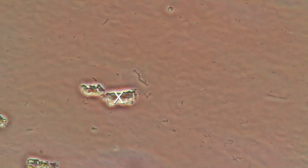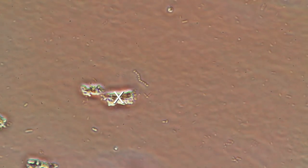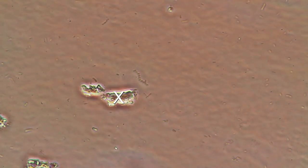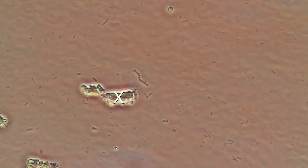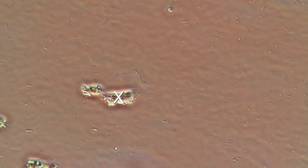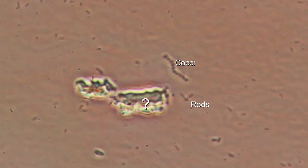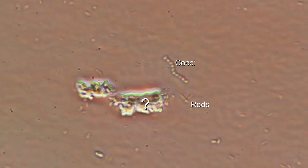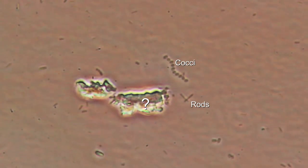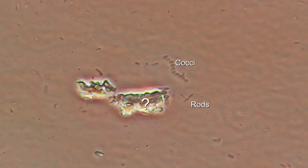This is what I see. First, the structure labeled X — ignore that, it's simply some kind of debris, undefined material. But you can see a lot of dots floating around from left to right — those are bacteria. Here it's a little bigger: the question mark is an unidentified structure, and the two types of bacteria are cocci and rods. Cocci are round bacteria and rods are elongated bacteria; these terms simply describe the shape.